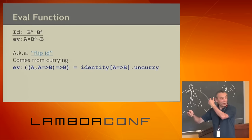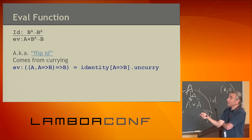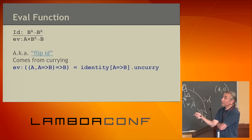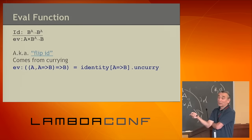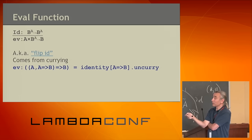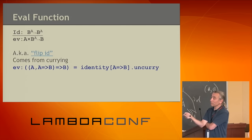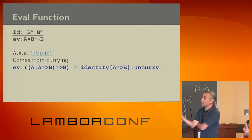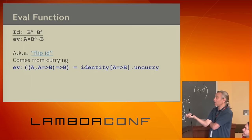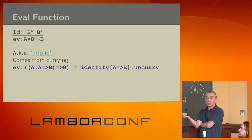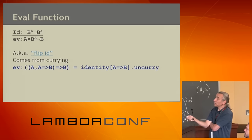Taking an instance of A and a function from A to B — which is an instance of B to the power of A — evaluation gives us the application of that function to the instance of A. It's also known as flip id in Haskell. So that's function application built from nothing using these constructions.